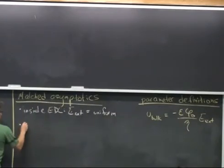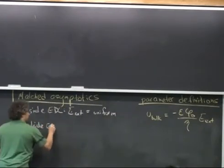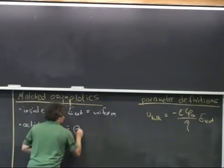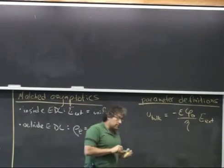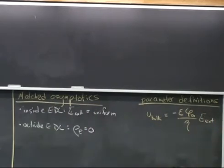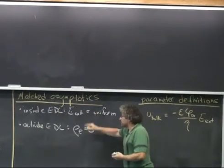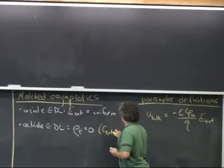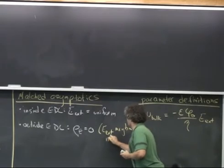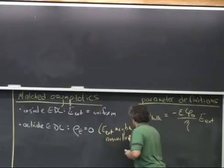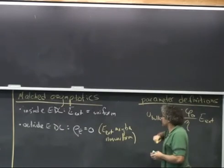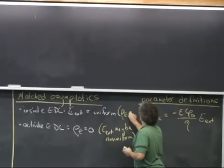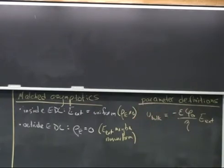Outside the electrical double layer, I've made this simplifying assumption that rho sub e is equal to 0, and this basically allows me to ignore the electrokinetics outside the electrical double layer. I'm basically turning the electrical double layer into a boundary condition. And the complements of both of these things are that outside the electrical double layer, my extrinsic electric field can be non-uniform. And similarly, inside this electrical double layer, I've assumed that the charge density is not equal to 0.